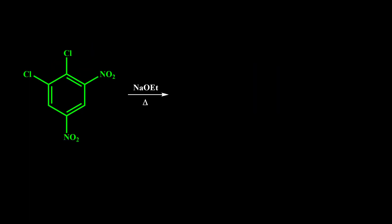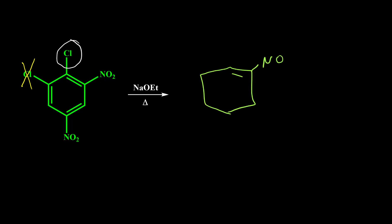In the next example, we again have nitro groups on the ortho and para positions of one chlorine, but the other chlorine does not have any electron-withdrawing group on its ortho or para position. So only the first chlorine is going to react — it has NO2 here and NO2 here — while the second chlorine remains unchanged during the reaction. The ethoxide anion attacks and kicks that chlorine out of the structure, giving the final product.